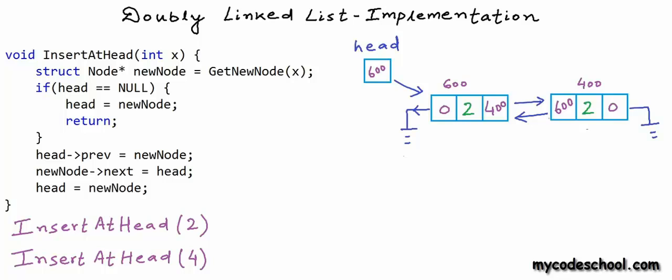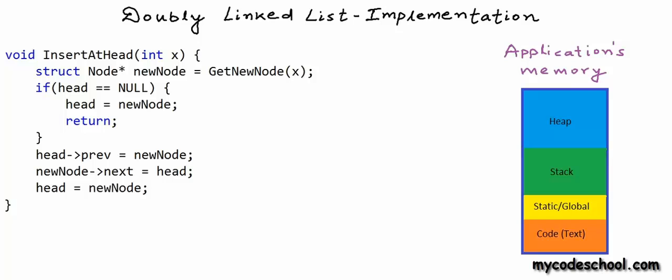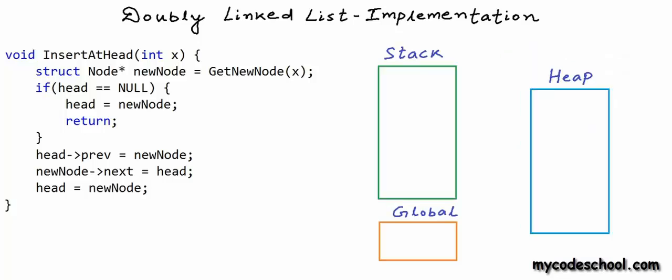Let's quickly see how things actually move in the various sections of application memory. The memory allocated to a program is typically divided into four segments, which we've seen before. The code or text segment stores all instructions. There is a segment for global variables. There is a stack section used like a scratchpad for function call execution. And heap is what we call dynamic memory. In our program, head is declared as a global variable, initially set to null for an empty list.